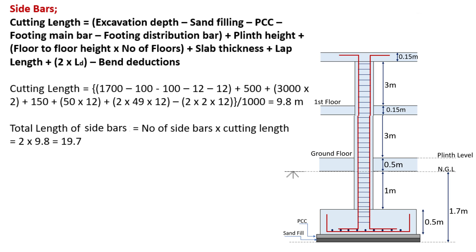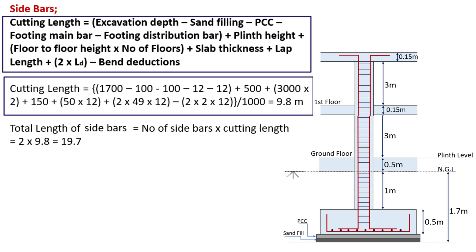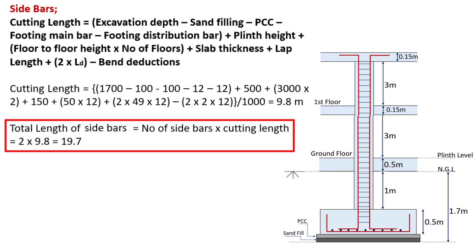Now let's do the calculations for side bars. The cutting length of side bars uses the same formula: excavation depth minus sand filling, minus PCC, minus footing main bars, minus footing distribution bar, plus plinth height, plus floor height multiplied by number of floors, plus slab thickness, plus lap length, plus twice development length, minus bend deductions. On substituting all values, the cutting length of side bars equals 9.8 m. Total length equals number of bars × cutting length — 2 bars × 9.8 m = 19.7 m.